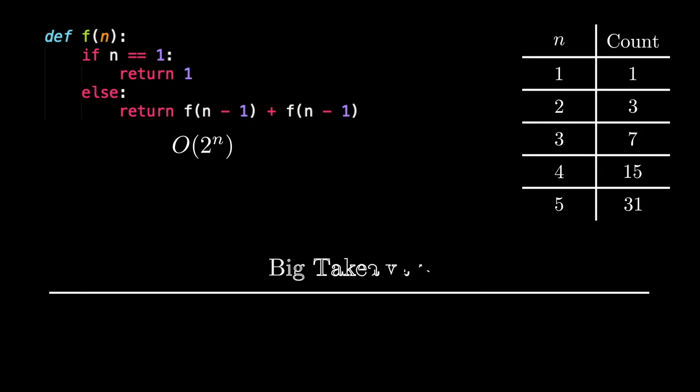The biggest takeaway from this example is that a lot of running time questions may require you to draw diagrams to help you determine the counts for various inputs and these diagrams can actually directly help you identify the overall growth. If there's any universal rule in problem solving, whether in computer science or not, drawing things out will never hurt.